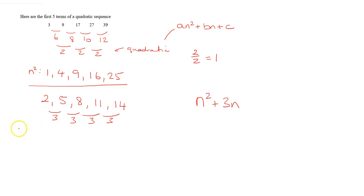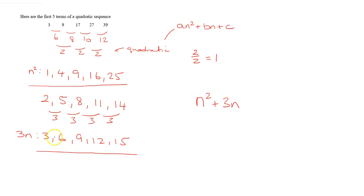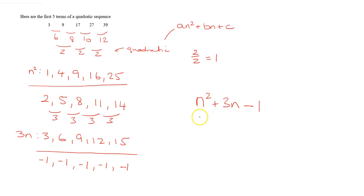Applying the same idea for the 3n part: the sequence for 3n is 3, 6, 9, 12, 15. Taking this away from the residual sequence: 2 minus 3 is minus 1, 5 minus 6 is minus 1, 8 minus 9 is minus 1, and the remaining terms are also minus 1. These are all the same, so c equals minus 1. Therefore, the nth term of this quadratic sequence is n squared plus 3n minus 1.